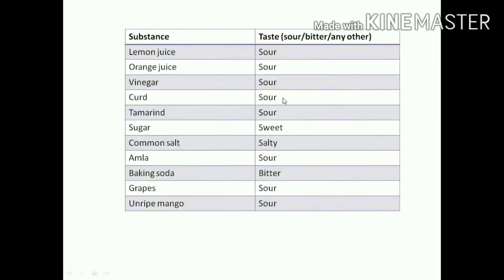Here on the screen you are seeing different substances and their tastes. First one is lemon juice - lemon juice tastes sour. Next is orange juice - orange juice is also sour, sometimes it tastes sweet. Then vinegar - your mother is using vinegar at home, that vinegar tastes sour, means 'khatta'. Vinegar is used in making pickles and different items. Curd is also used for eating and for making different things. Then tamarind - 'tentudu' - that tamarind also tastes sour.